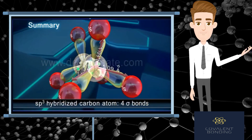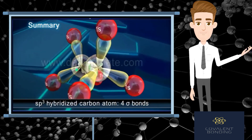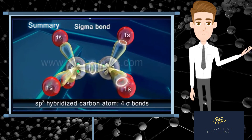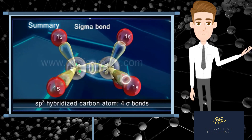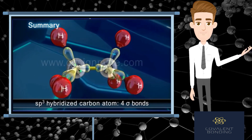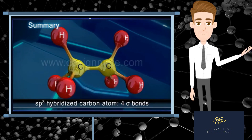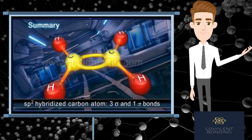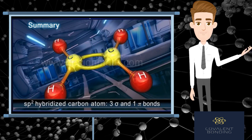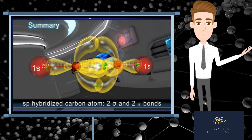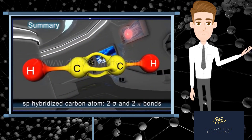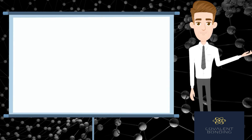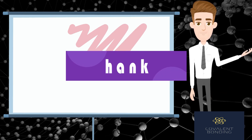To summarize: whenever a carbon atom in an organic compound forms four sigma bonds directed along the corners of a regular tetrahedron, it is sp3 hybridized. A carbon atom forming three sigma and one pi bond is sp2 hybridized, while one forming two sigma and two pi bonds is sp hybridized. Thanks.